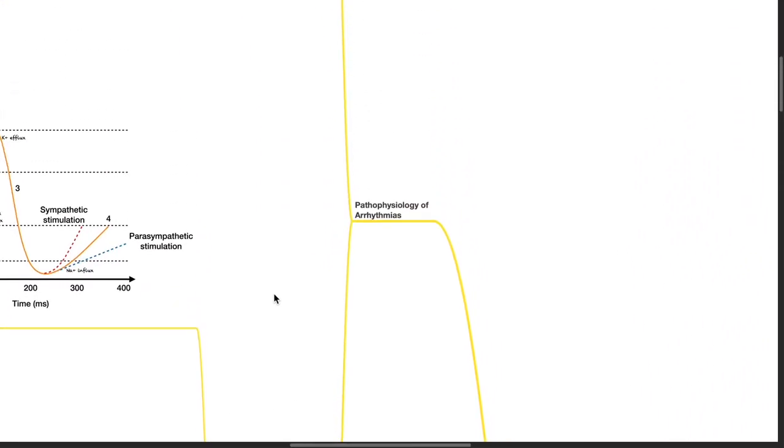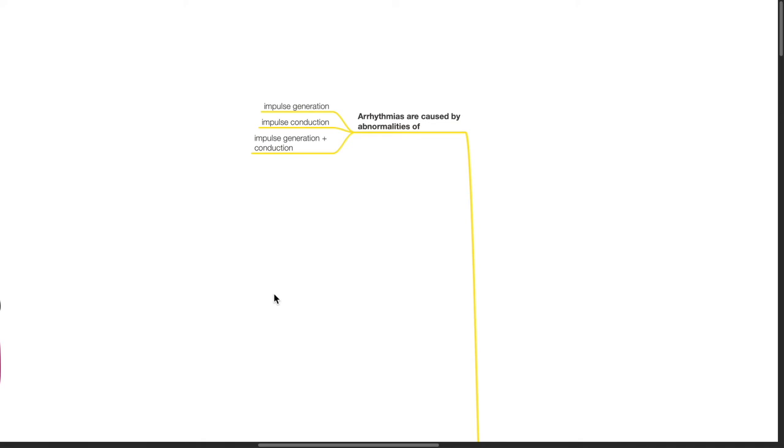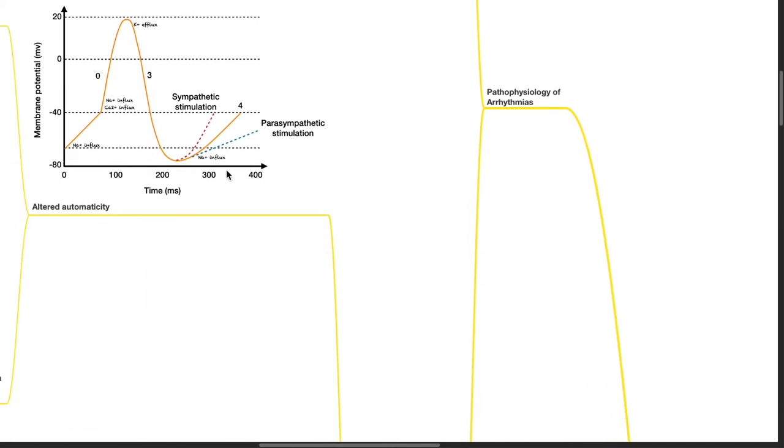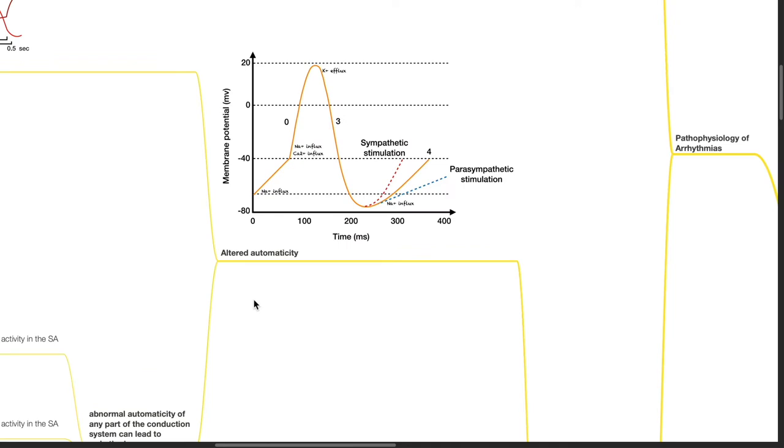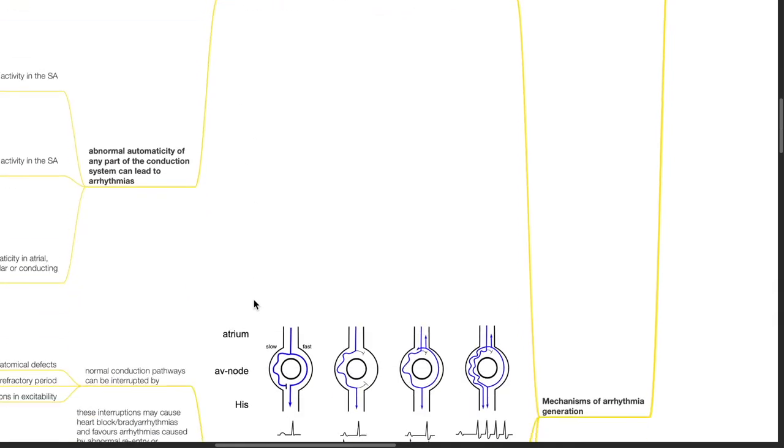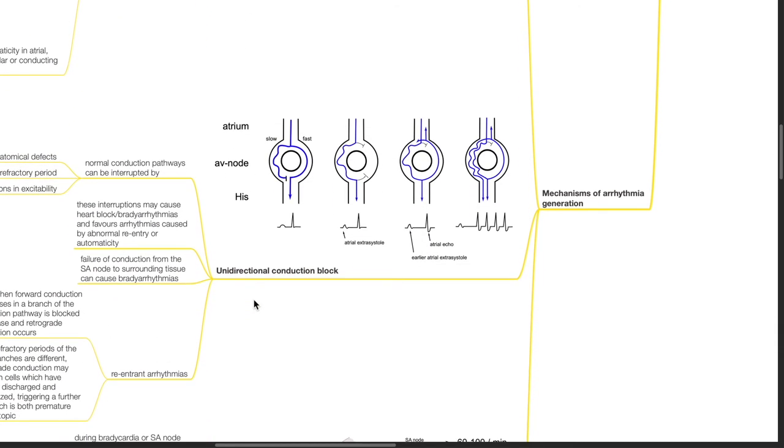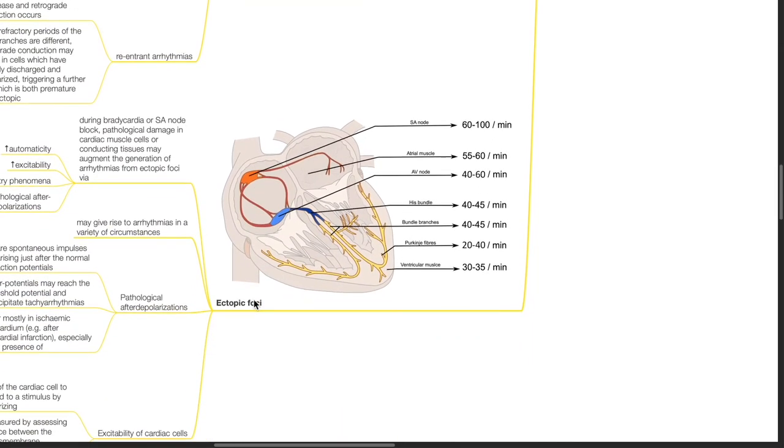Pathophysiology of arrhythmias. Arrhythmias are caused by abnormalities of impulse generation, impulse conduction, or both. Mechanisms of arrhythmias generation include altered automaticity, unidirectional conduction block, and ectopic foci.